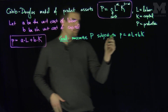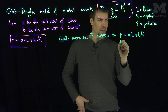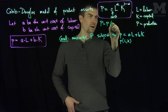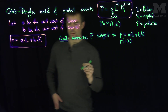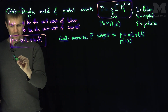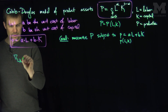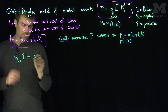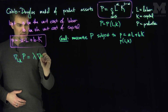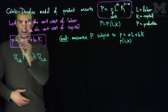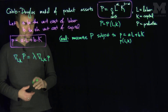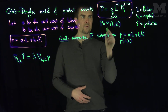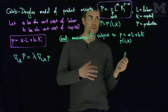So little p is a function of L and K, and our capital P is also a function of L and K. We compute the gradients in the L and K variables of the production, which must equal a scalar lambda times the gradient of little p with respect to L and K.